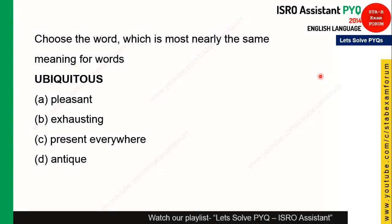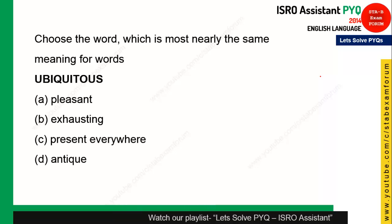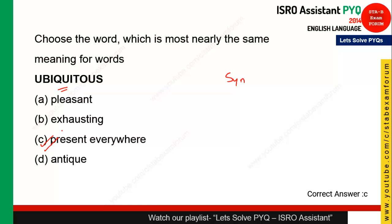The first question is from synonyms. You will find two to three questions from synonyms and antonyms in the exam. The word for which you need to give the same meaning is 'ubiquitous.' Nowadays, mobiles are ubiquitous — meaning mobiles are present everywhere. So the synonym is 'present everywhere,' and option C is the correct answer.